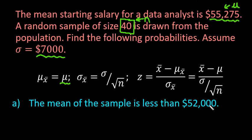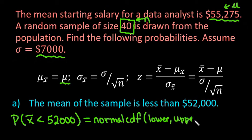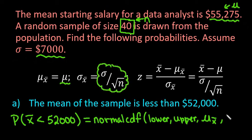For the first problem, the mean of the samples is less than $52,000. We're looking for the probability that x-bar is less than $52,000, which means we're looking for the area to the left of this value. We're going to use normal CDF in our calculator. The parameters we have to put in are the lower value, upper value, mean, and standard deviation. Because we are dealing with a sampling distribution, we use mu sub x-bar — which is just mu — and we have to use sigma divided by the square root of the sample size, not just the $7,000.